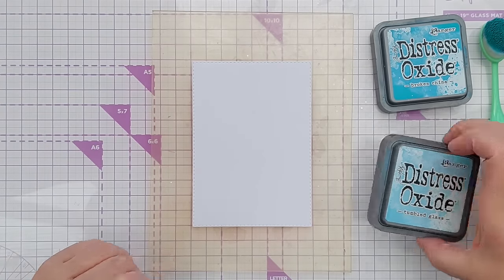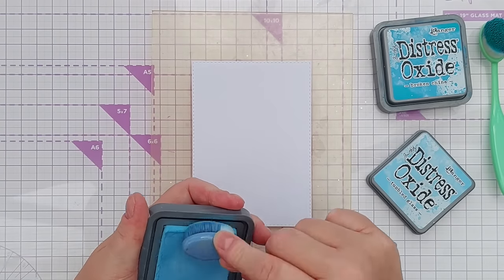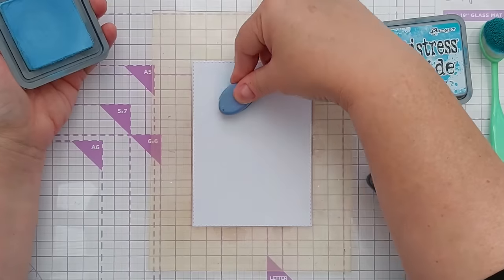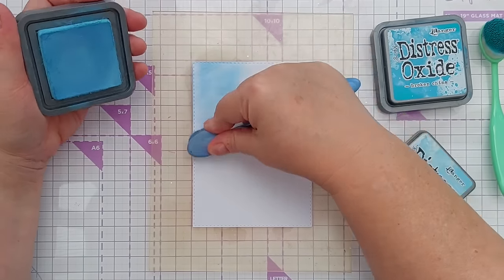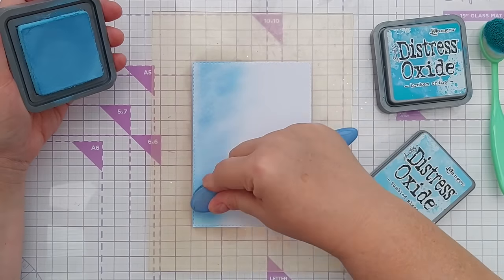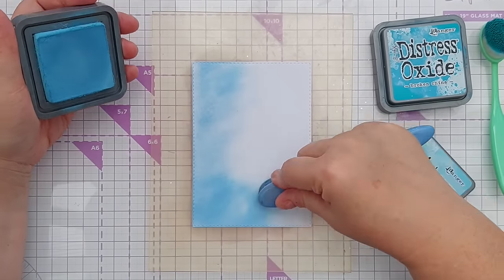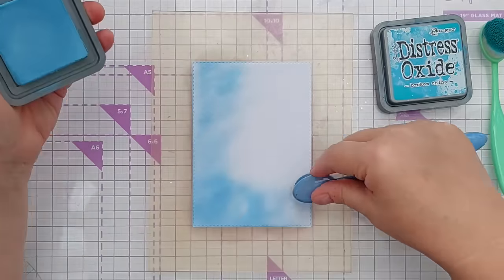The first thing I'm going to do is take some distress oxides. I've got Tumbled Glass here and I'm going to blend it all over this panel of smooth white card. I cut this out with a stitched rectangle die and this is going to be the front panel on my card.